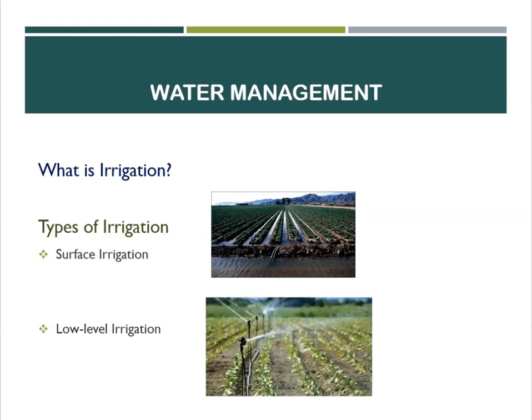What are the types of irrigation? There is surface irrigation and low-flow irrigation. Surface irrigation is the putting of water that flows directly over the surface of the soil.